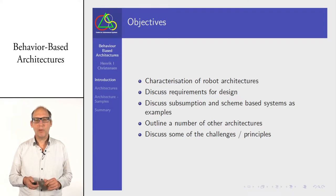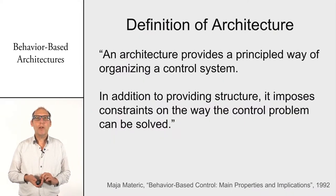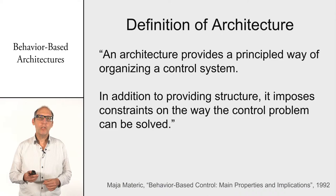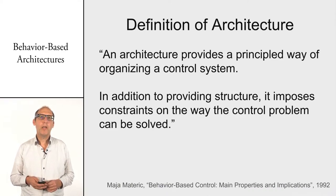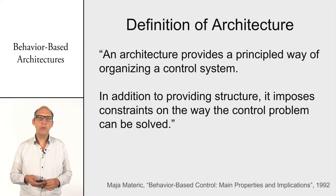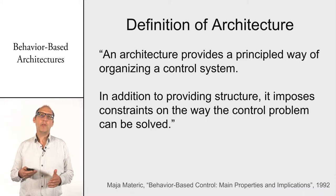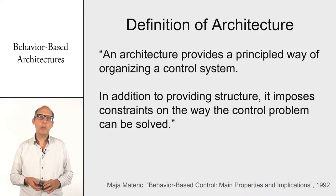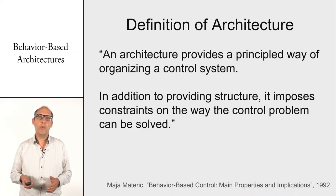We start with a simple principle: what is an architecture? An architecture provides a principled way of organizing a control system. In addition to providing structure, it imposes constraints on the way that control problems can be solved. The key words are 'principled way' and 'constraints.' In principle you limit yourself, but those constraints help because you recognize structure — just like buildings always have an entrance and hallway. You restrict yourself to make your code more reusable for others.